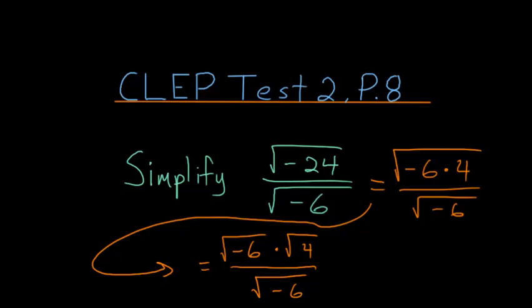And now notice that the numerator and denominator share this square root of minus 6. So we can cancel them out and we're left with just the square root of 4.